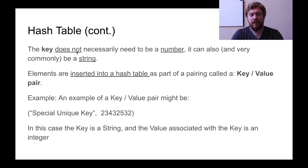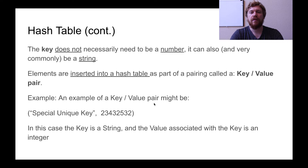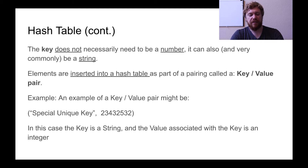The key does not necessarily need to be a number — it can also, and very commonly is, a string. Elements are inserted into a hash table as part of a pairing called a key-value pair. The key is somehow mapped to an index in the array. An example of a key-value pair might have a string as the key — here I've just said 'special unique key.'